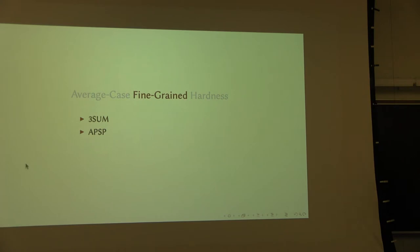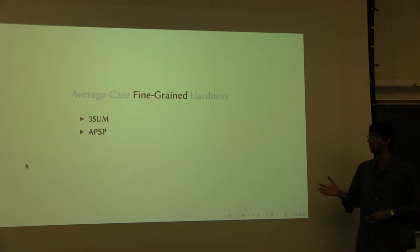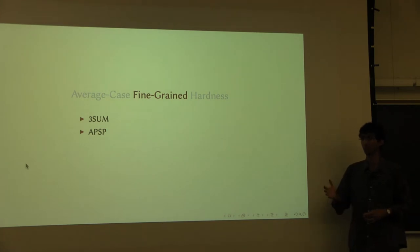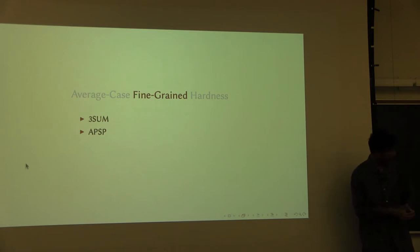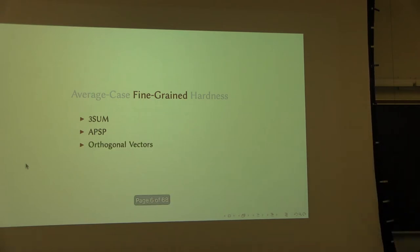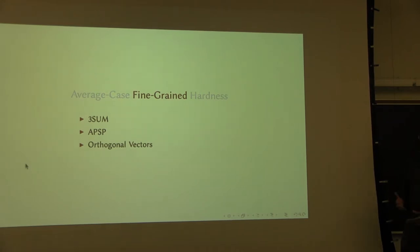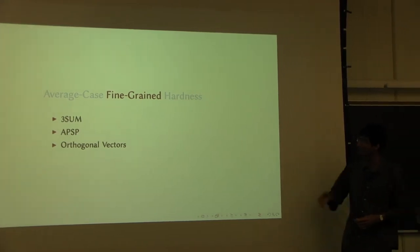Another example of such a problem is the all-pairs shortest path problem on graphs, where I give you a graph and ask you to give me the shortest distance between all pairs of points. Again, the complexity of this problem seems to be related to the complexity of lots of other graph-theoretic problems. And another example — which I will be using as the running example throughout the talk — is what is called the orthogonal vectors problem, which is related to problems like edit distance and so on.